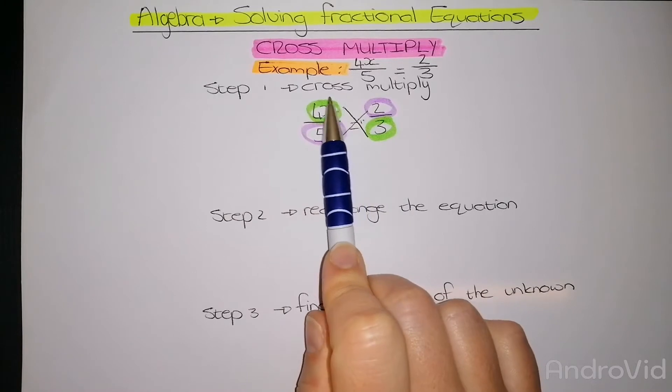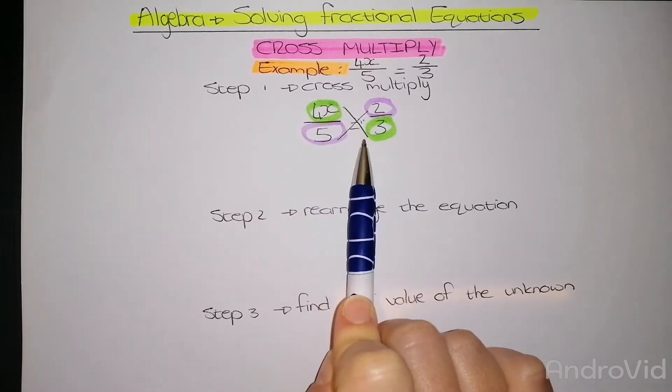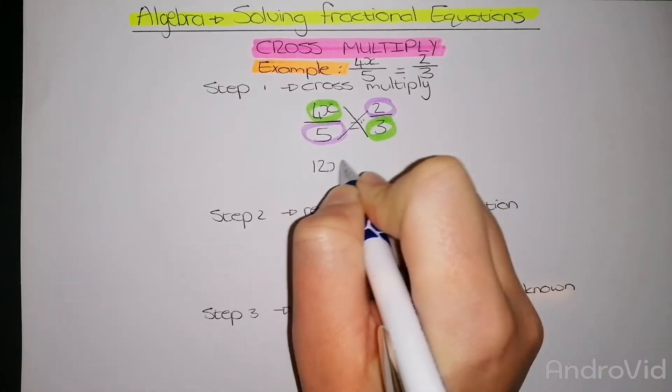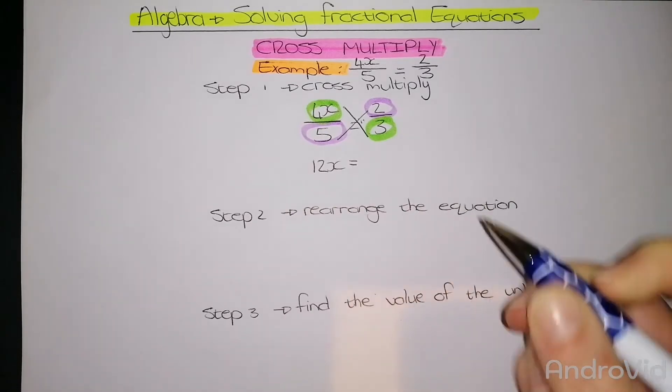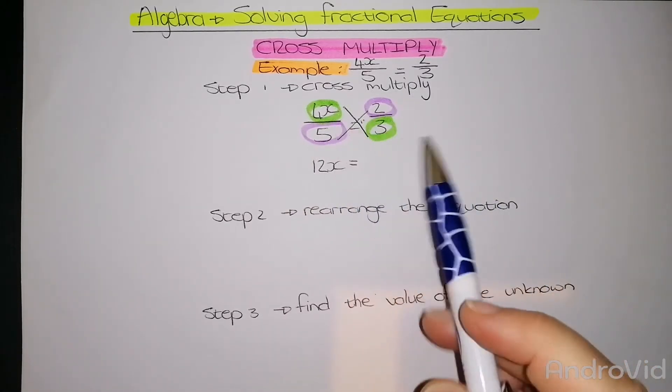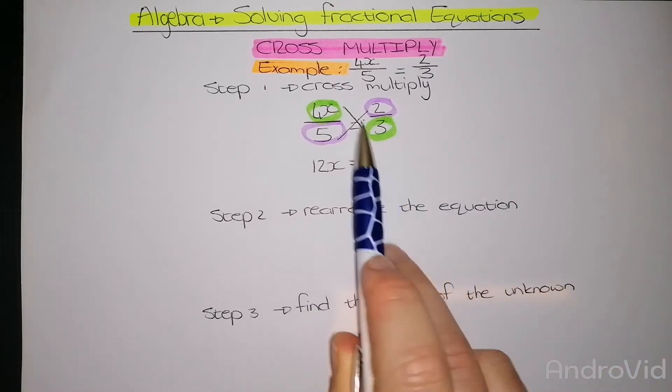I've color-coded it to make it easy. So I need to multiply this 4x by 3. 4x times 3 equals 12x. So I'm going to write 12x on the left-hand side of the equal sign. It does not matter which side you write the answers, just as long as one answer is on the left and the other is on the right.